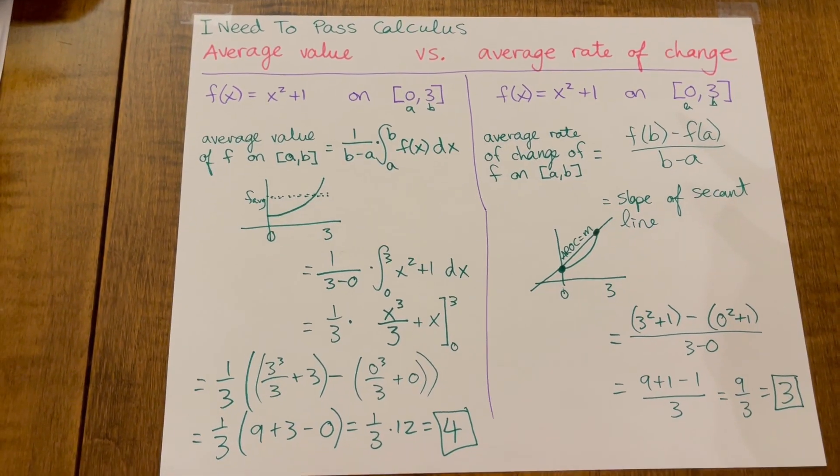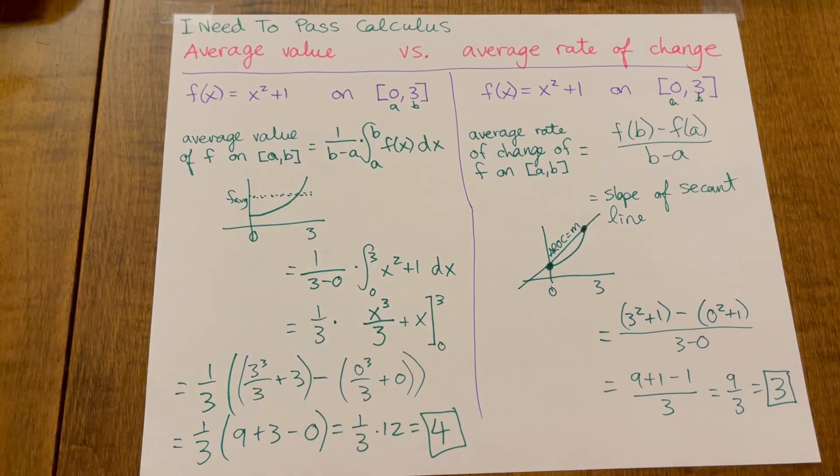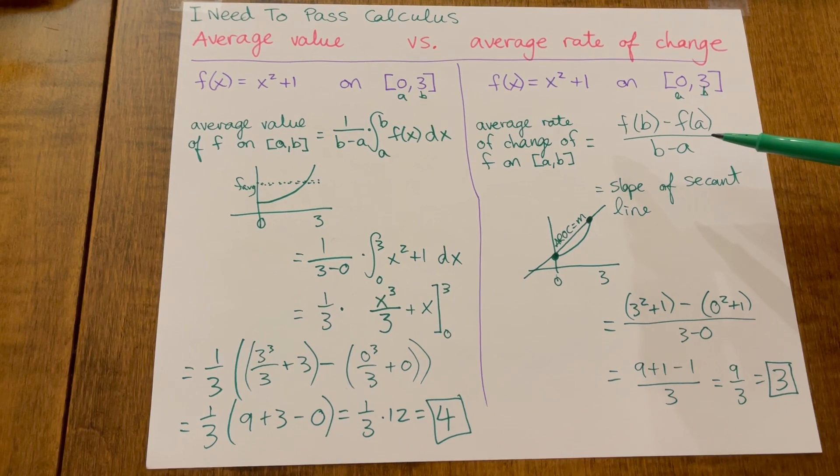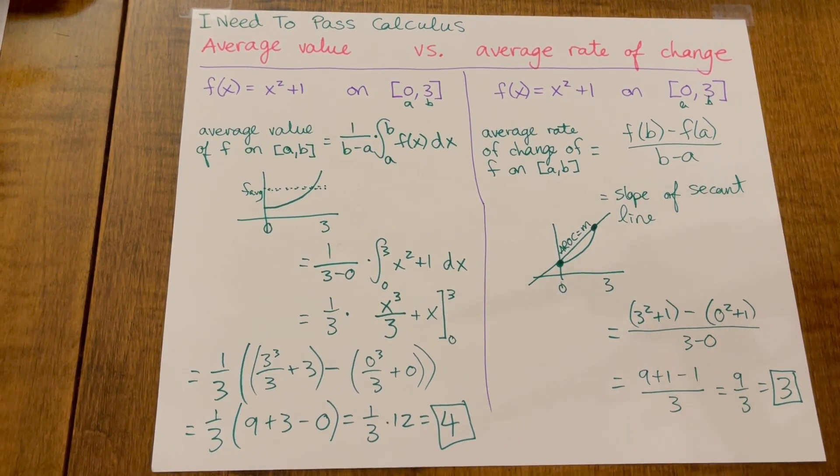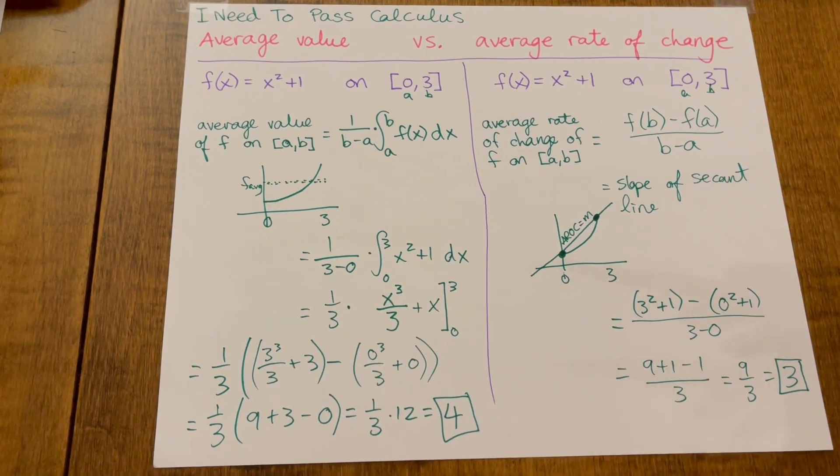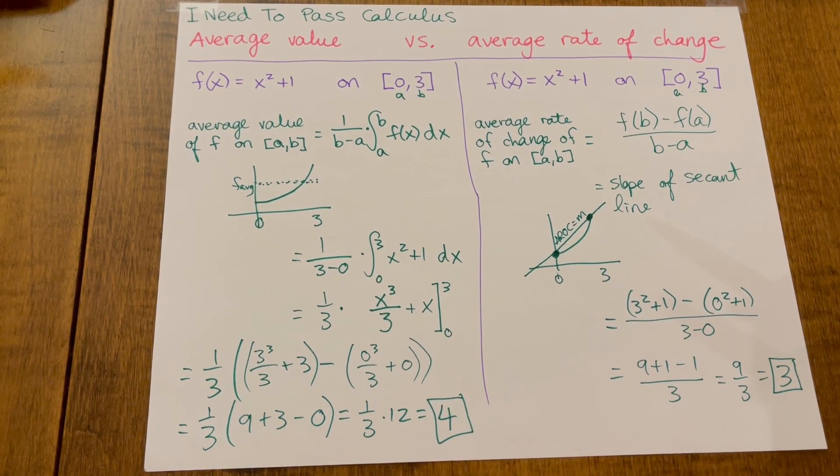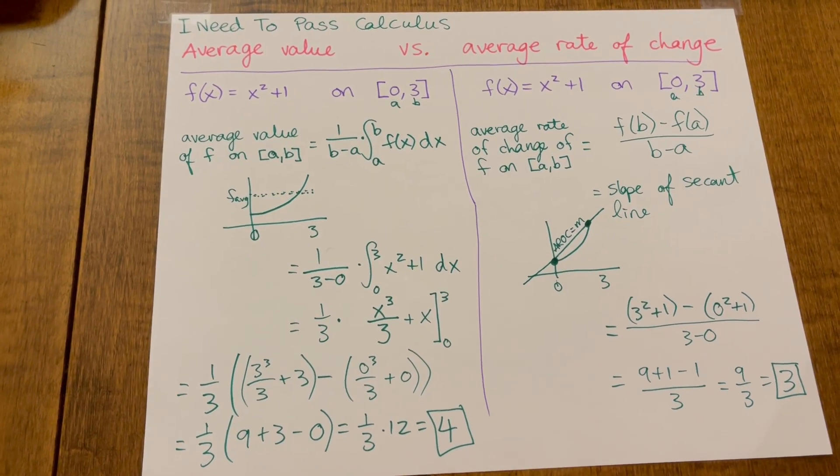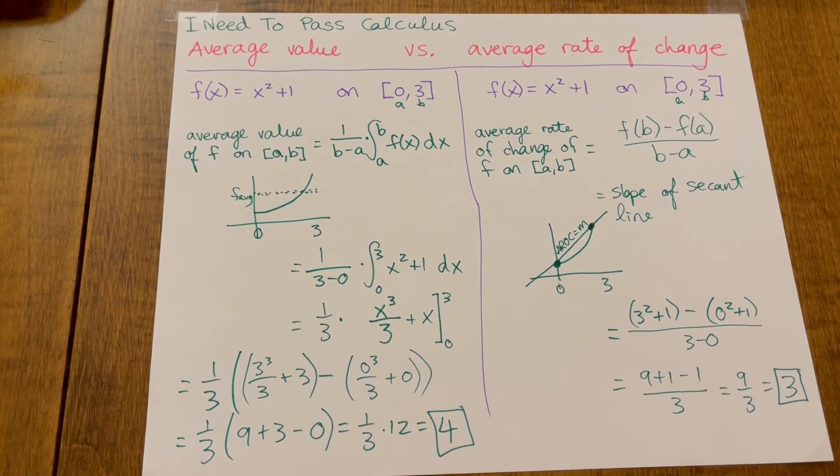So average value versus average rate of change. Calculating average value involves the definite integral. Calculating the average rate of change just uses a good old-fashioned slope formula. It's usually taught pretty early in calculus. But when you have a final exam and you see these two problems, especially under stress, you might get jumbled up which one's which. So it's good to review these guys. Let me know if you have any questions. I love working out the problems that you send me. Just comment down below what you want me to make a video on. Bye!